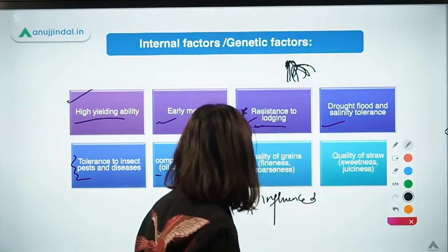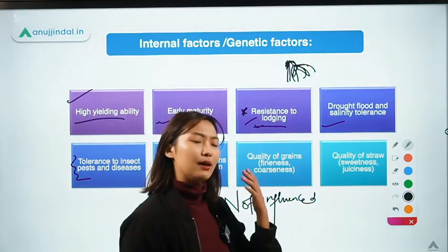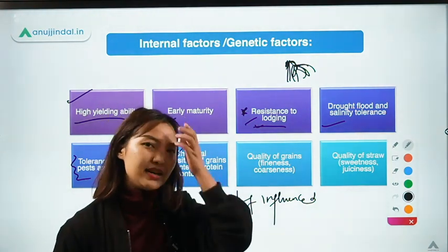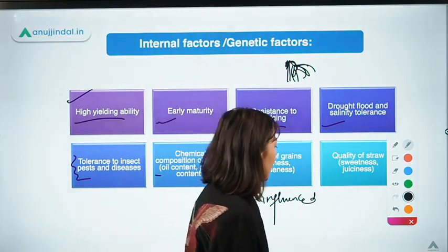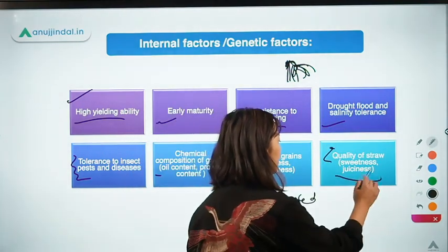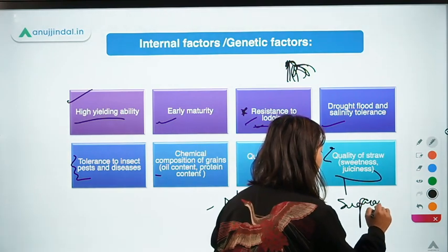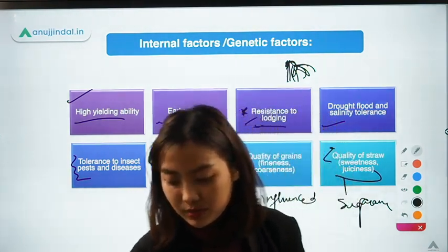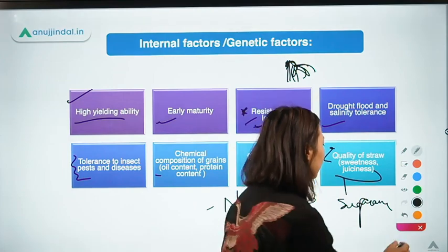We also have the quality of the grains — whether the grain is coarse or fine. For example, basmati rice compared to a normal local rice has a bigger, longer, and finer grain size. The last characteristic is the quality of the straw, whether it relates to sweetness or juiciness. An example is sugarcane itself — some sugarcane varieties may be less juicy or less sweet compared to other varieties. So this is all about the internal characteristics.